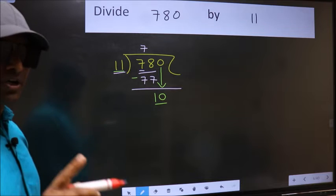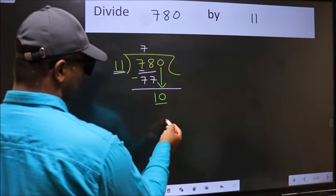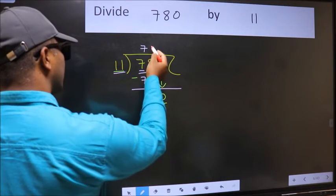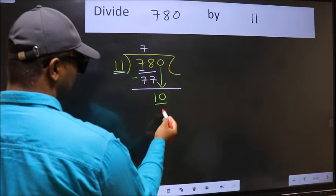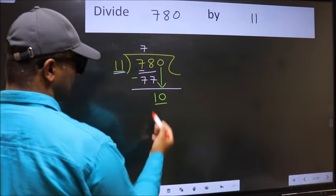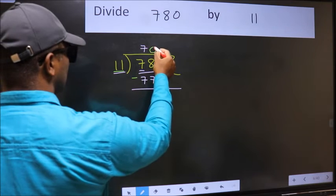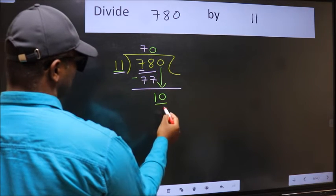Instead, what should you do? Which number should we take here? If I take 1, we will get 11, but 11 is larger than 10. So we should take 0. 11 times 0 is 0.